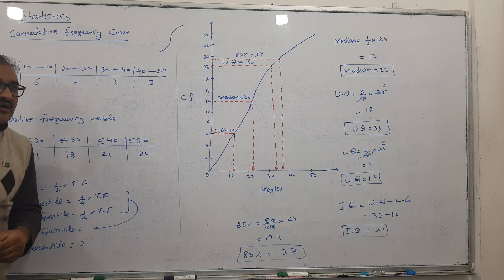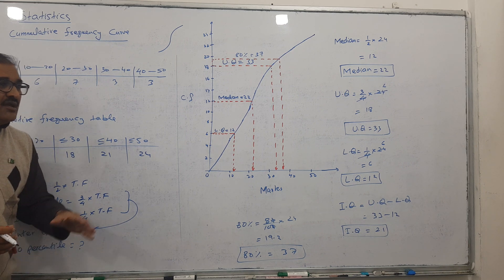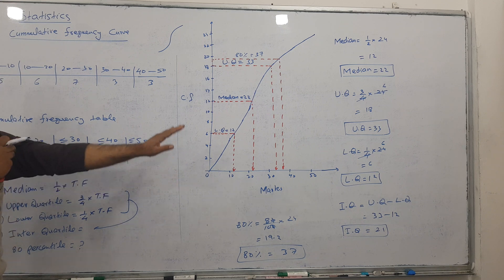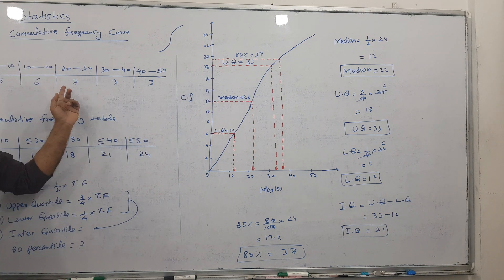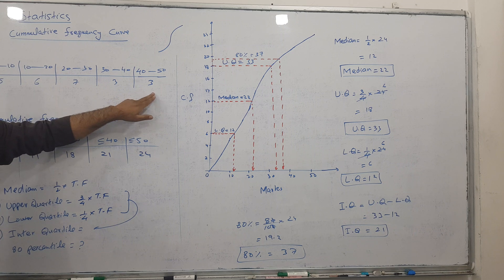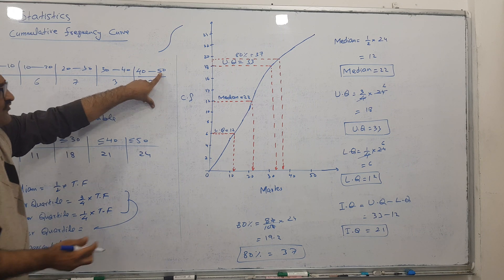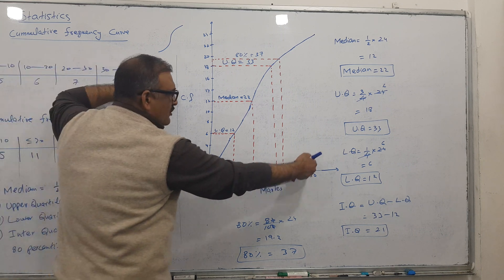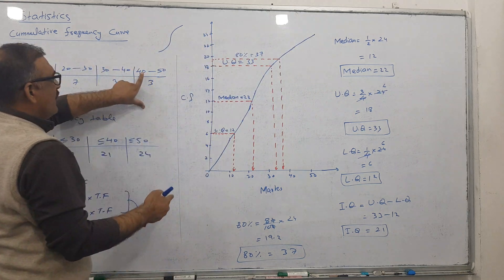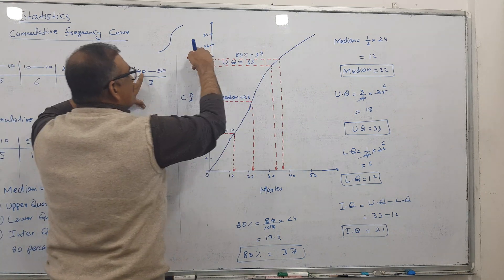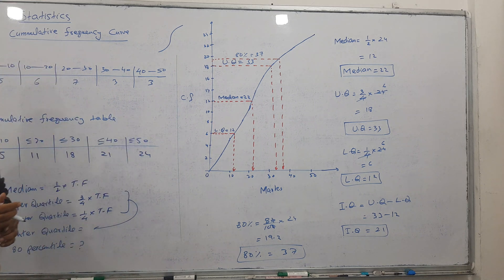There are two ways to find the missing frequency. Mostly the examiner gives you the graph, and you need to find the frequency from it. For example, if the last frequency is missing: go from 50 on the graph, note the CF, then go from 40 and subtract — that gives the answer. That's enough for today.